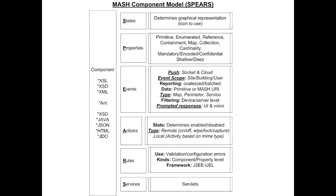Components are described using XML; however, their structure comes from a metamodel described using XSD. This metamodel is used by JAX-B to create Java classes for all of the component metadata and for serialization and deserialization of the bundle XML.